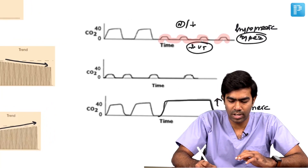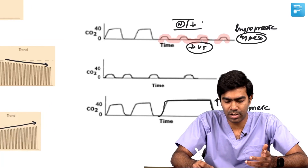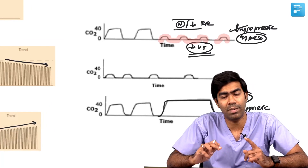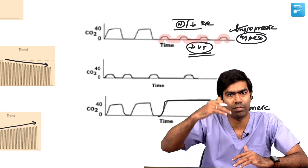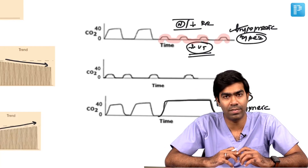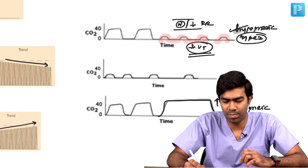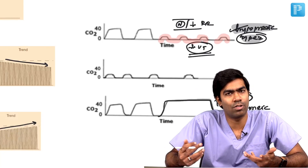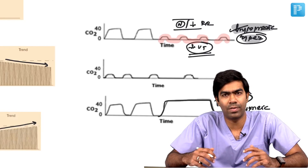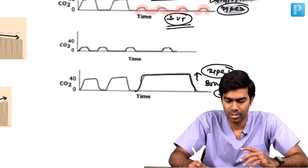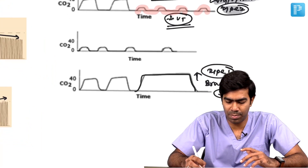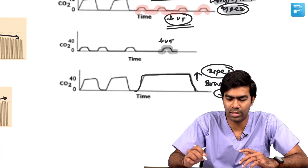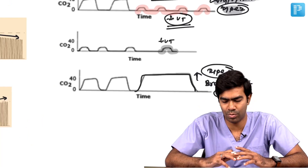Low tidal volume can be due to neuromuscular damage. In Type 2 hypopneic hypoventilation, the respiratory rate can be normal, decreased, or even increased — the respiratory rate doesn't matter here. The tidal volume is low. So in this type of hypoventilation, the height of the EtCO2 waveform will be reduced. This kind of hypopneic hypoventilation can happen if the patient is on excessive sedation, like excessive ketamine, during surgery or critical care.